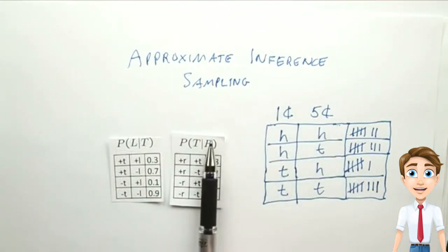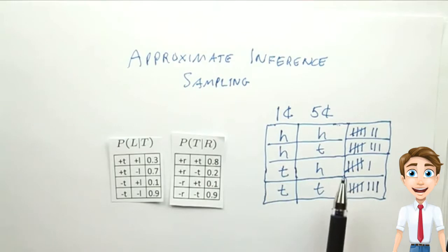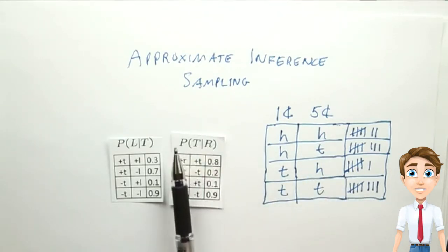If we don't know these numeric values but we can simulate the process, we can still proceed with sampling, whereas we couldn't with exact inference.